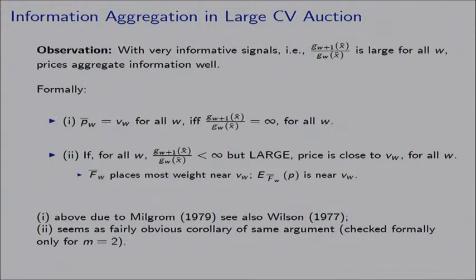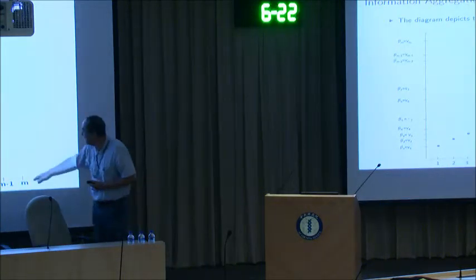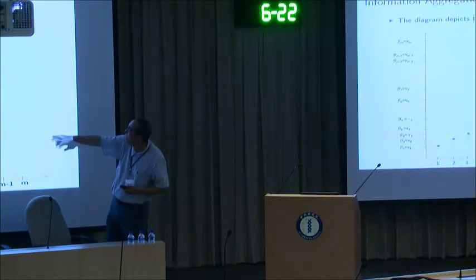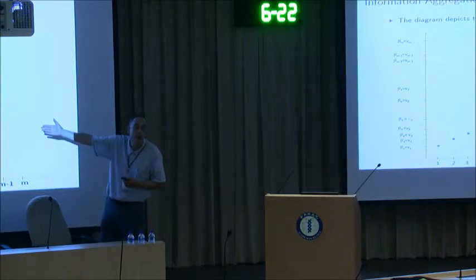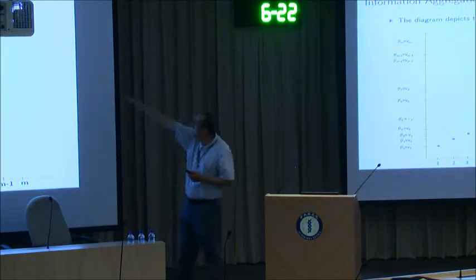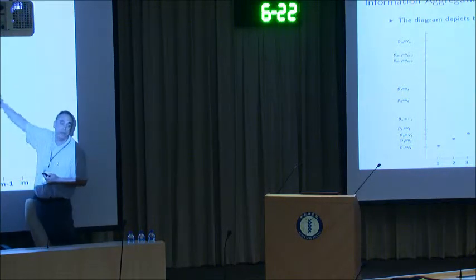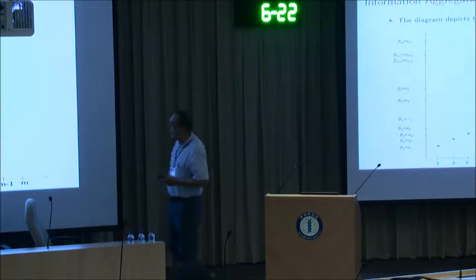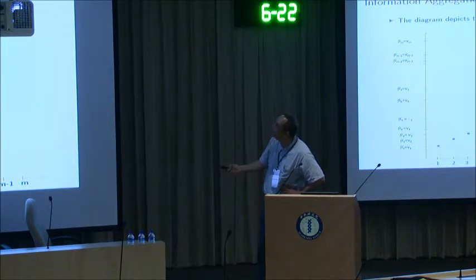This is what they had to say about the large ordinary auction. Looking at the picture: on the horizontal axis we have the states one through m, and on the vertical axis we have the prices. The picture tells us that in state W the price will be V_W — if the likelihood ratio at the top is infinite, and approximately so if it is finite but very large. This line represents the omitted states and prices. This is the picture for a large common value auction.